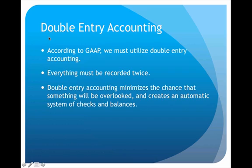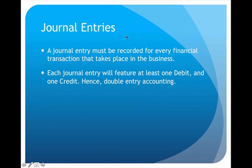Double entry accounting basically means that everything we record must be recorded twice. Now why would we want to do that? It seems unnecessary and like additional work, but the nice thing about double entry accounting is that by recording everything twice it creates an automatic system of checks and balances. By having things in two places at the same time, you always have something to compare and the ability to double check that everything is correct.